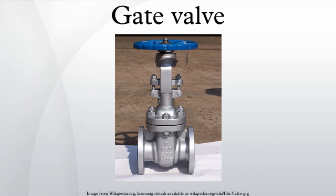Gate valves are characterized as having either a rising or a non-rising stem. Rising stems provide a visual indication of valve position because the stem is attached to the gate such that the gate and stem rise and lower together as the valve is operated. Non-rising stem valves may have a pointer threaded onto the upper end of the stem to indicate valve position, since the gate travels up or down the stem on the threads without raising or lowering the stem. Non-rising stems are used underground or where vertical space is limited.